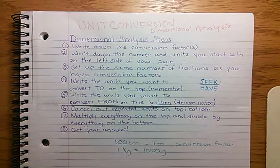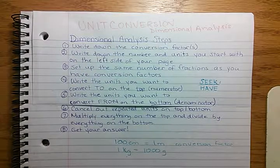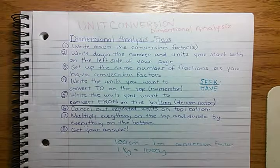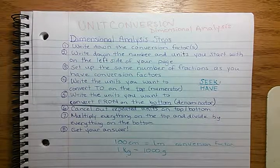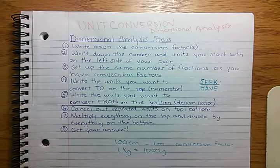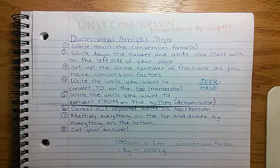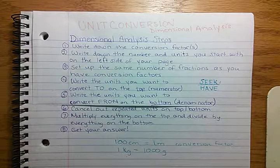Step six: cancel out repeated units on the top and the bottom. Step seven: multiply everything on the top and divide by everything on the bottom. Step eight: you get your answer.